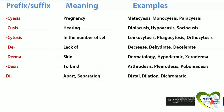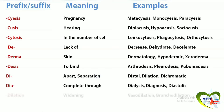Di means apart or separation. Distal means away from the point of attachment. Dilation is expansion or becoming wider. Dichromatic means exhibiting two colors. Di also means complete, like dialysis, which is the process of removing waste products and excess fluid from the body. Diagnosis is identification of the nature of an illness. Diastolic is the force exerted when the heart is at rest.